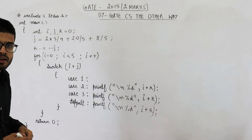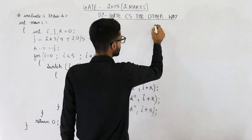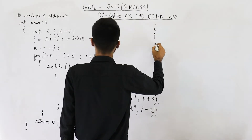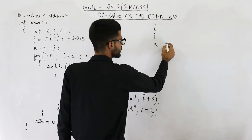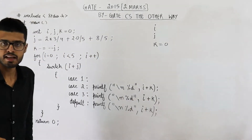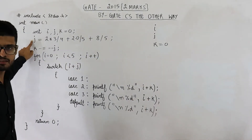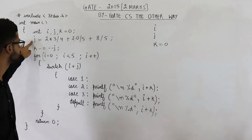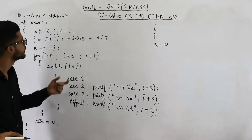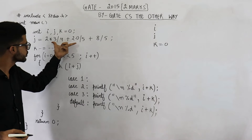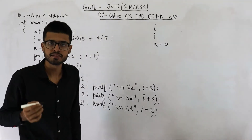You can see we are trying to declare some integers i, j, and k. k is initialized with the value 0. In the next line, we are trying to assign some value to the variable j. To solve this, you need to know the precedence of operators in C language.